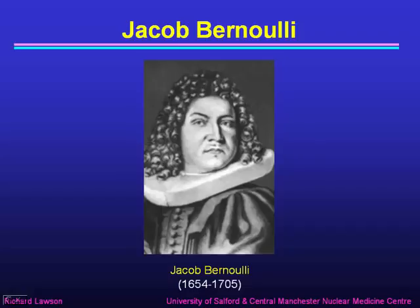His brother Johann was also an excellent mathematician, and in fact there was bitter rivalry between the two of them to see who could make the greatest contribution to mathematics. But after Jacob's death in 1705, his brother Johann succeeded him as professor of mathematics, so in the end they each had equal honours. Jacob's book The Art of Conjecture was published after his death by his nephew, another mathematician in the Bernoulli family.